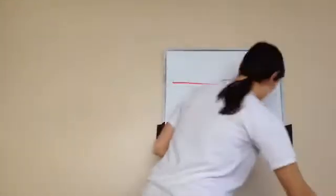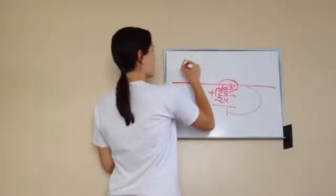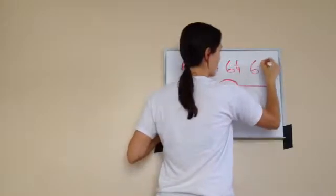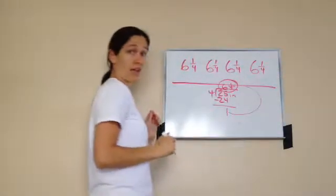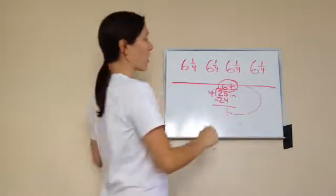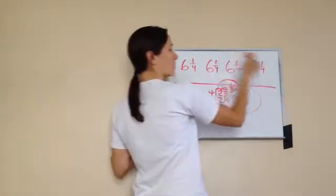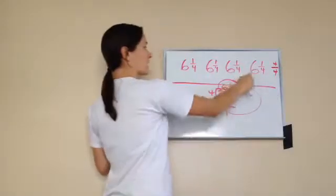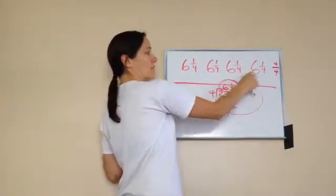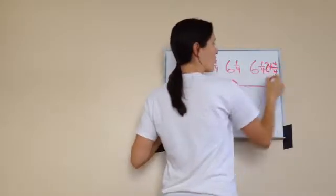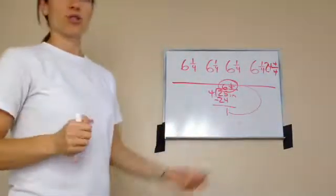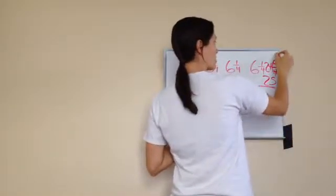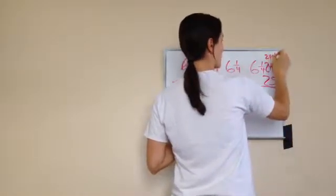Because each person got 6 and 1 fourth. If I added up all of those, 1 plus 1 plus 1 plus 1 would equal 4, and then my denominator would be 4. And then 6 plus 6 plus 6 plus 6, which is 4 times, which would be 24. So it would be 24 and 4 fourths, which would equal 25 total, because 4 fourths is 1 whole. So it would be 24 plus 1 whole.